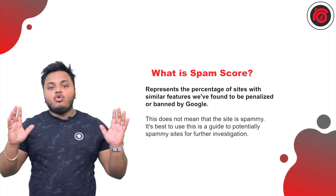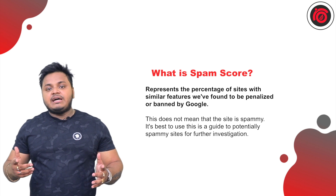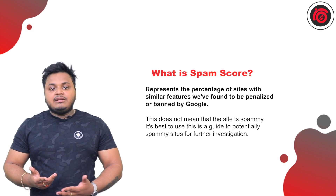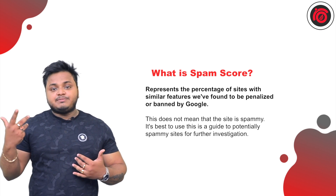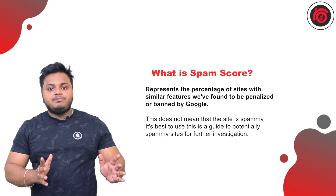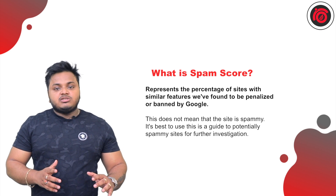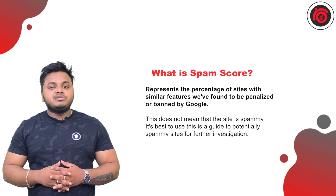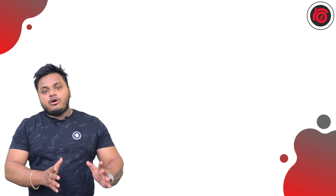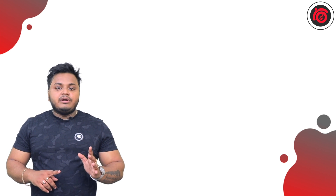Spam score is basically a percentage out of 100 which shows how much spam your link profile has compared to your overall collection of backlinks. For instance, if you have a 10% spam score, that means 10% of your overall backlinks are spammed. Google's recommended guideline is to keep it as low as possible, but industry experts believe that within 7% is acceptable. My recommendation is to keep it as low as possible — for example, our campaign contains a 2% spam score, which is good.